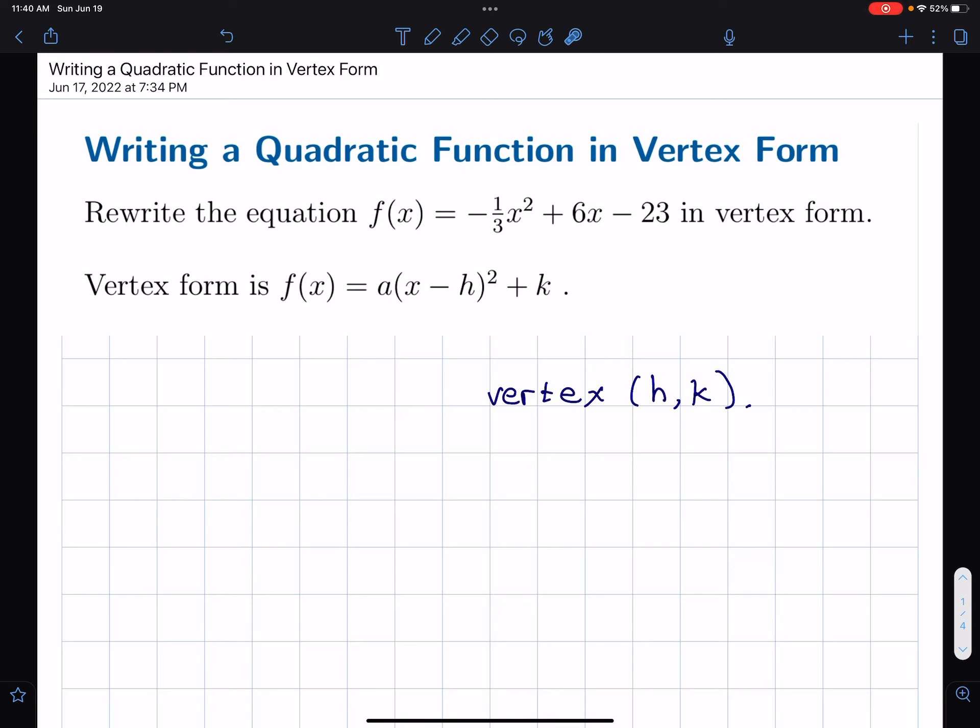And by the way, this quadratic, the graph of this is a parabola. I know it's a downward-facing parabola because I have negative one-third right there. So negative makes it go down. And so our parabola is a downward-facing parabola, and then the vertex is hk. Maybe when we're done, we can try to sketch this graph.